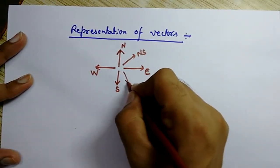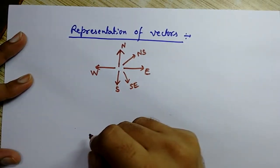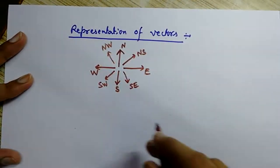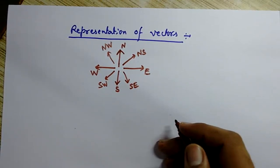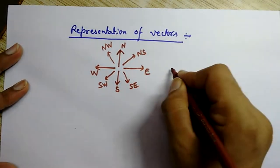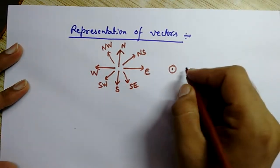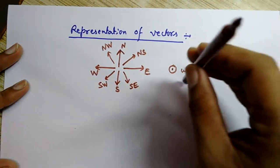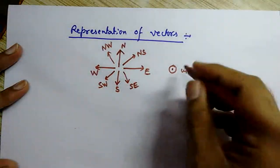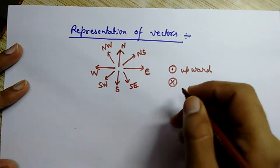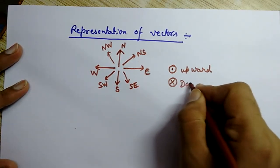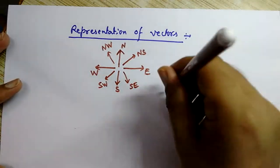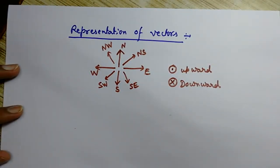We can have vectors in the south-east, south-west, and north-west directions as well. So we can have a vector in any direction. Also, if we represent a vector as a dot, it means an upward direction — coming out from the surface of this paper. And if we represent it as a cross, then it means a downward vector going inside the surface of this paper.